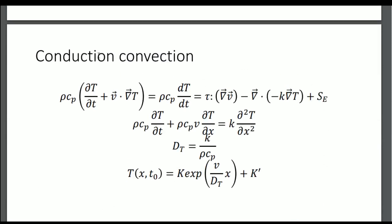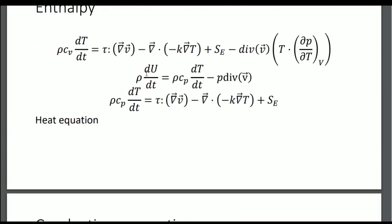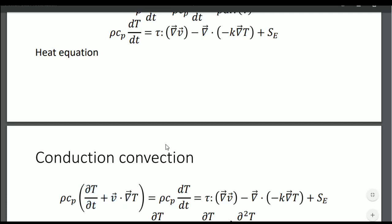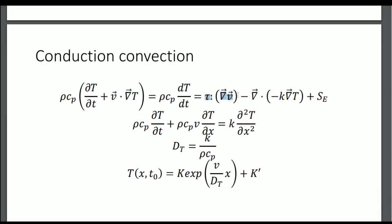Now we discuss the conduction-convection system — in French, 'conducto-convectif' — where both conduction and convection terms are non-zero. Since we have a straight derivative, we need to split it in an Eulerian formalism, which gives us the expanded form. For the most part, we will neglect the viscous and source effects.